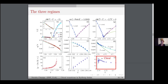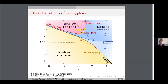To summarize the phase diagram: the nature of the phase transition between the period-three phase and the disordered phase changes multiple times along the line. It is three-state Potts at the crossing of the critical and integrable lines. It is chiral on both sides of this three-state Potts point but not too far from it. Then it is through the floating phase — an intermediate phase of very small width, narrower than the red line — first through the Kosterlitz-Thouless transition and then through the Pokrovsky-Talapov transition.